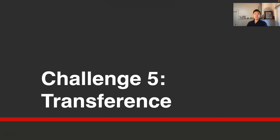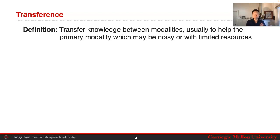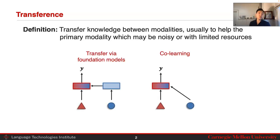Hi, everyone. The fifth challenge we're going to look at is that of transference. In transference, the goal is to transfer knowledge between modalities, usually to help some primary modality we care about, which may be noisy or with limited resources. We're going to look at two types of transference: one with transfer via foundation models, and the other one via co-learning.